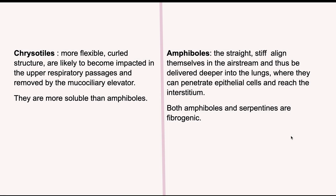What is the difference between chrysotiles and amphiboles? There must be some structural difference to explain the difference in pathogenicity. In chrysotile, the fibers are more flexible and have a curled structure. When they have a curled structure, they get impacted in the upper respiratory passage and are removed by the normal cilia — the mucociliary elevator. So these are less pathogenic. Also, they are more soluble than the amphibole ones.